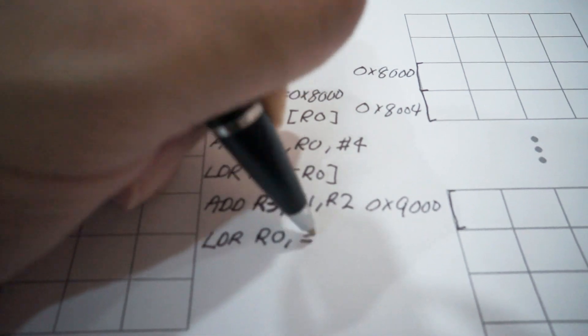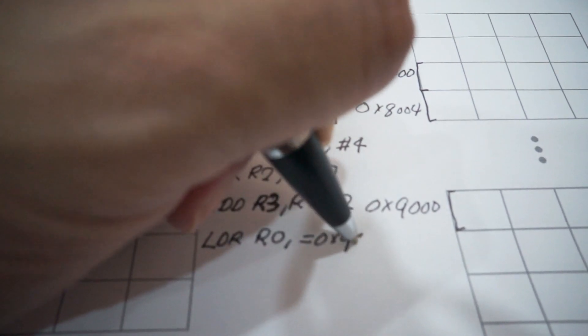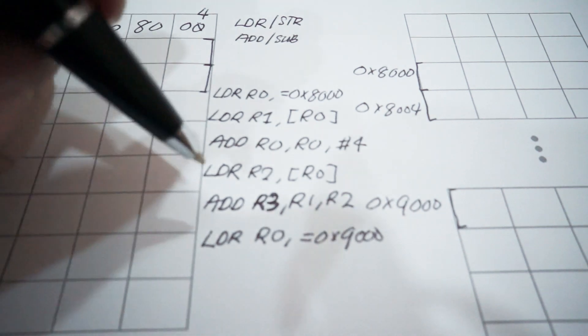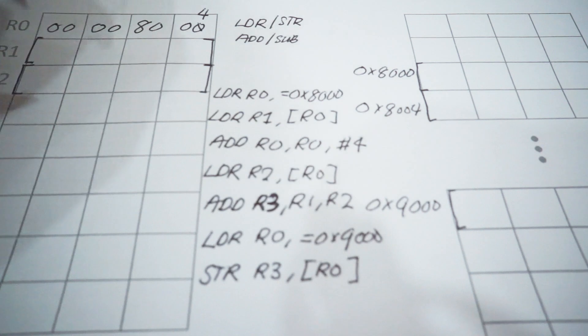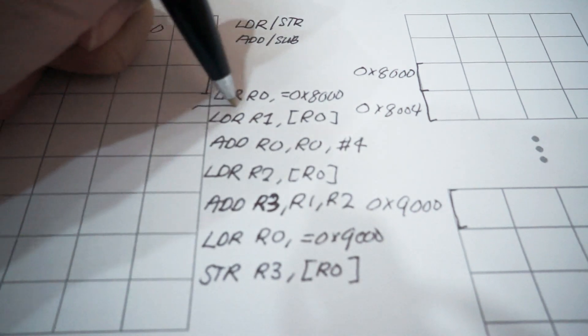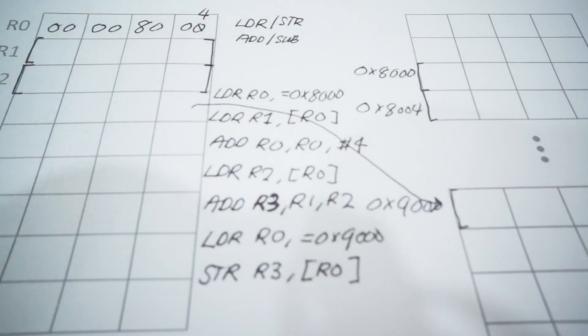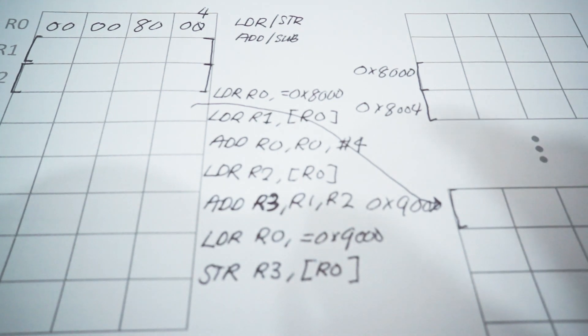In order to store the result back to memory, we will first load the value 0x9000 into R0. And finally, use the store instruction to move the value from R3 back to memory at the address given by R0. Of course, this is one solution for the exercise — you can try to figure out another version that might achieve the same operation. And this concludes the video today, and I will see you in future videos.